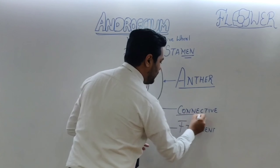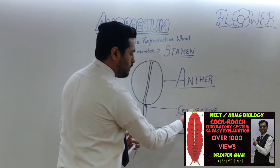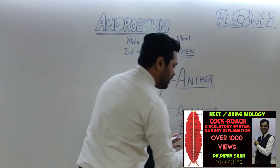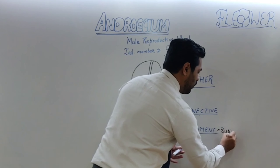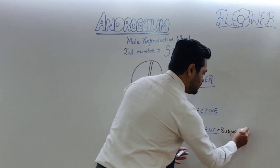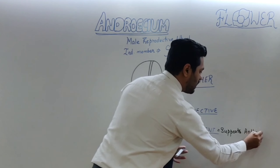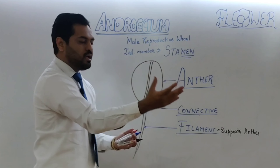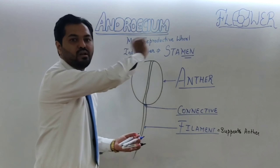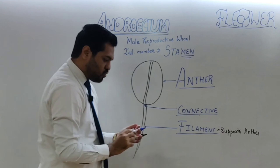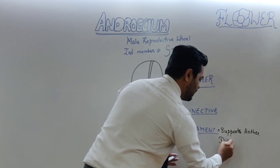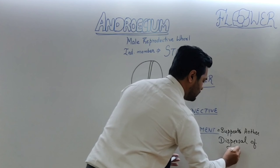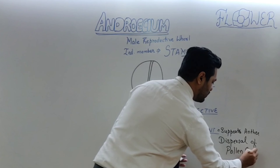So the stamen has three parts: anther, filament, and connective. The main function of the filament is to support the anther. Another function of the filament is to help in the dispersal of pollen grains.